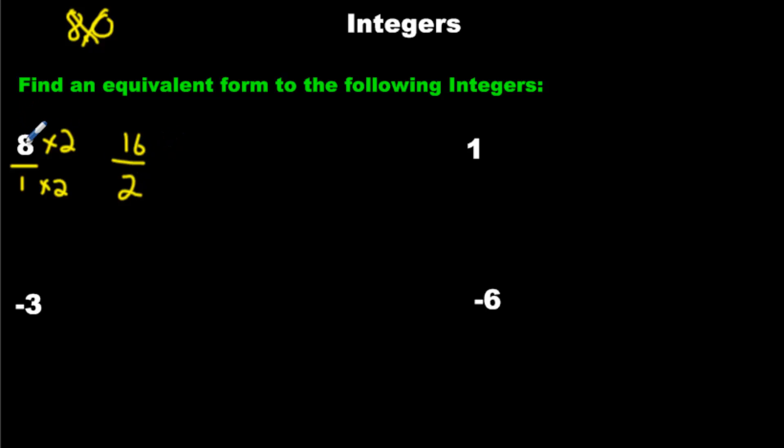16 over 2 is the same as 8. I can also multiply it by another number. Let's multiply it by 3. We can multiply this now by 3 and multiply the denominator by 3, and we've got ourselves 24 over 3.